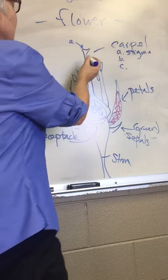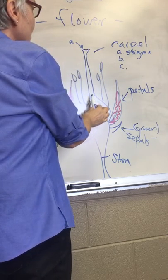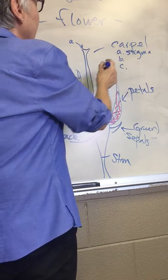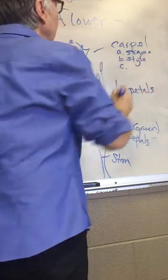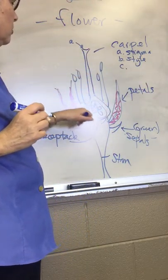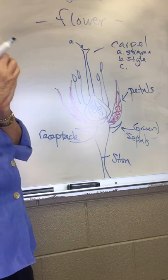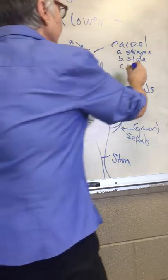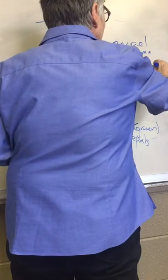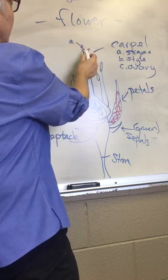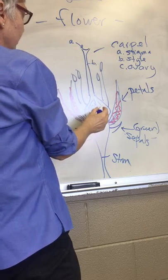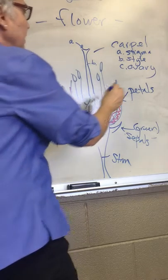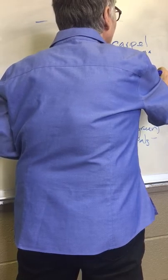There's a long tube-like structure that's called the style, and that connects the stigma to the swollen enlarged portion at the base of the flower, and that is called the ovary. So we've got the stigma, the style, and this structure down here is the ovary.